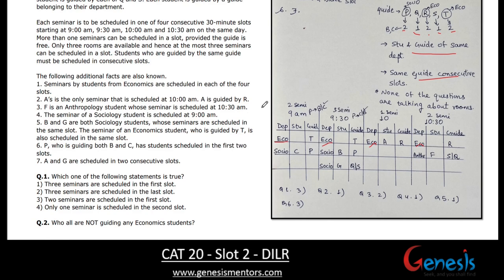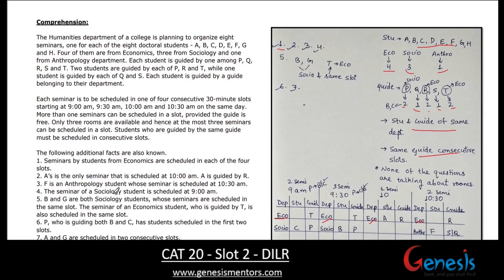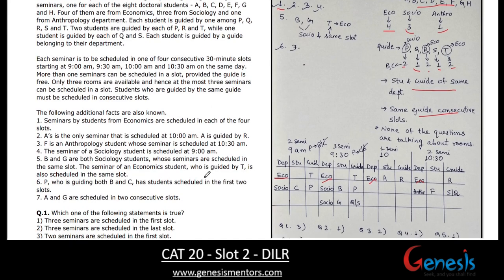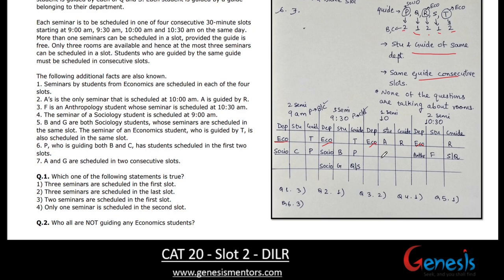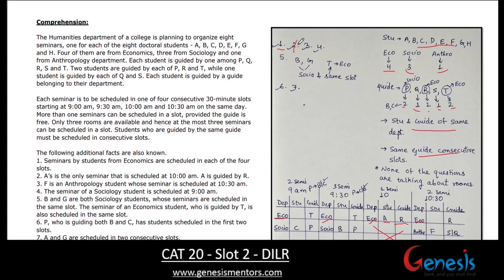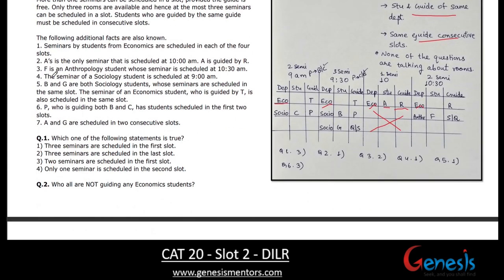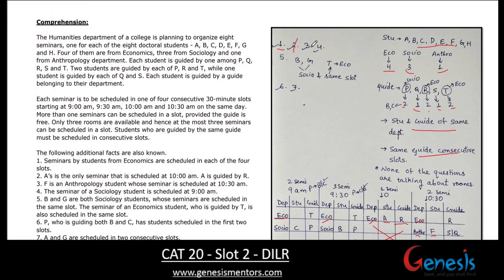The second condition says A is the only seminar scheduled at 10 a.m. — so only A's seminar happens at 10 a.m., and A should be from the economics department. A is guided by R, so the guide is also fixed as R. The third condition says F is an anthropology student whose seminar is also scheduled at 10 a.m., so at 10 a.m. we have one economics student (A) and one anthropology student (F).